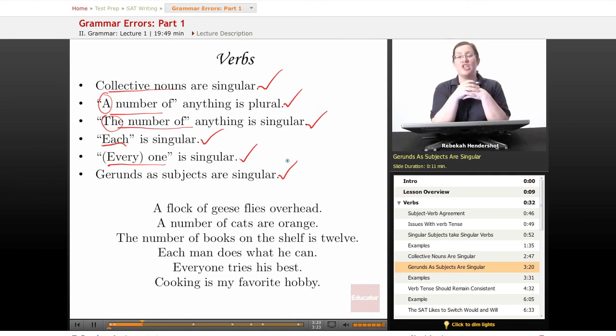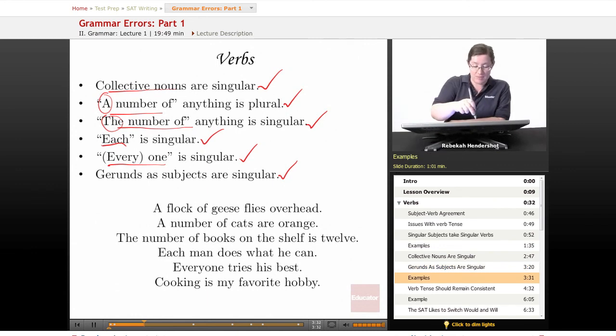What is a gerund? A gerund is a verb ending in ing that is acting like a noun, usually describing an activity of some kind. Let's look at some examples. A flock of geese flies overhead. Now, of geese is a prepositional phrase. Flock is a collective noun. It describes a group. So even though there are many geese, there's only one flock, one group, so the subject is singular, so it gets the singular verb, flies. A number of cats are orange. Well, a number of anything is always treated as plural, so number are, plural verb.